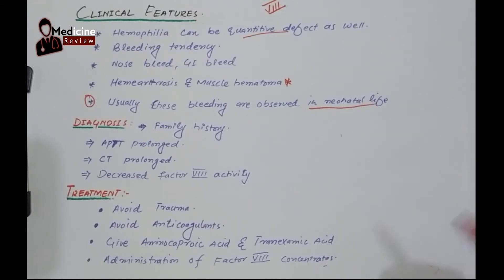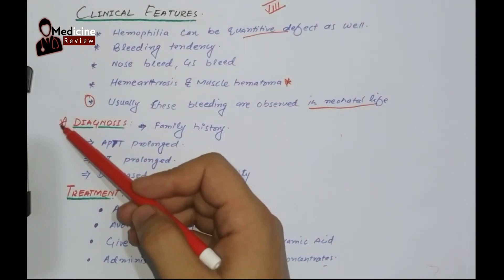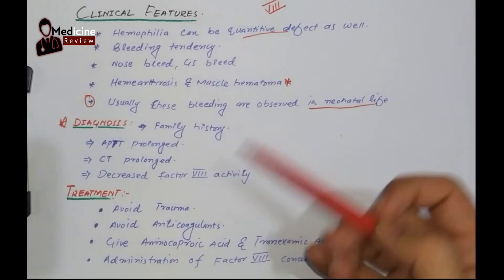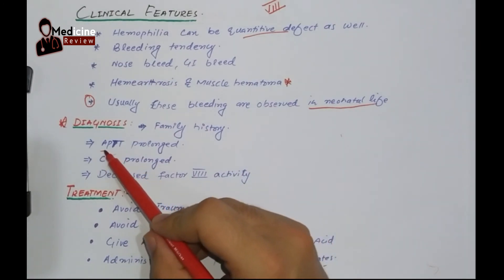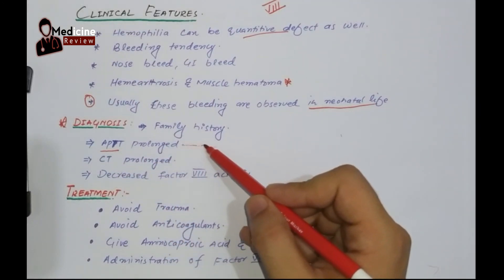What are the other conditions which can be diagnosed at the time of birth? Please, if you know such conditions, write them in the comment section. Another diagnostic feature is family history. As we discussed earlier, it is X-linked, so either from the mother's side or the father's side, there will be one male who had such disease previously. So family history plays a very important role. Another is activated partial thromboplastin time — the APTT is prolonged.